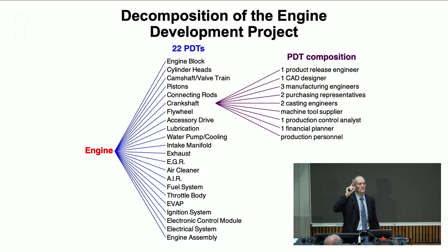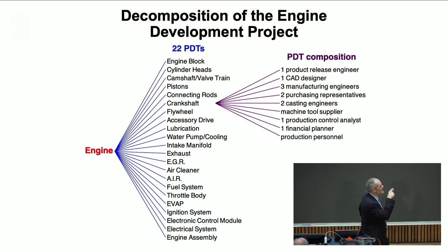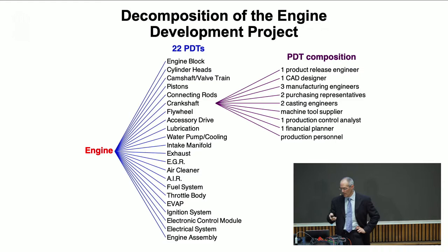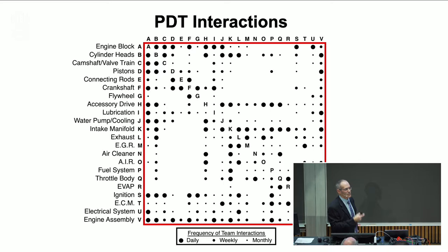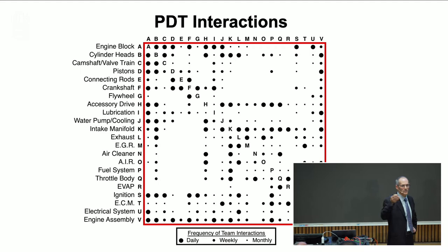Assuming every team knows what it's doing and has the right concurrent engineering cast to do their component, the question is how do they work across the components to make the engine work — not just to have a good crankshaft. They need to manage this network of connections. We asked each team how frequently they interact with the other teams — daily, weekly, or monthly — a very simple assessment. Each team reported on the other 21 teams. We put that data into this matrix and tried to make sense of it.